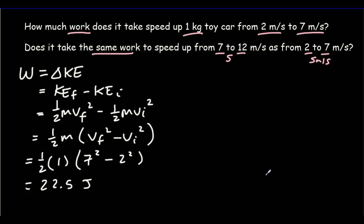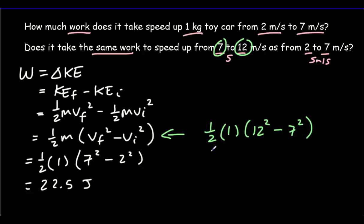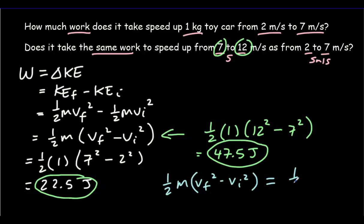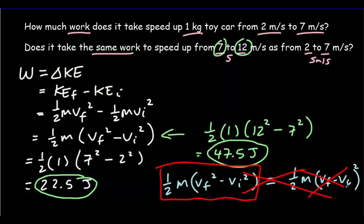Now let's check from 7 to 12 m/s: one-half × 1 × (12² − 7²) gives 47.5 joules — more energy than the previous case. I point out this example because students often make the mistake of thinking one-half M (V_final² − V_initial²) is the same as one-half M (V_final − V_initial)². That is not true at all. If they were the same, we would have gotten the same answers. Use the correct expression; don't confuse the two.